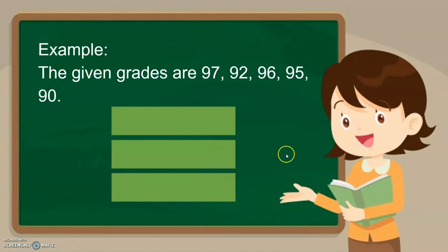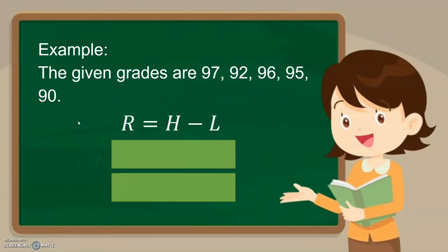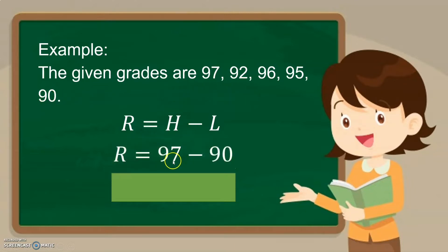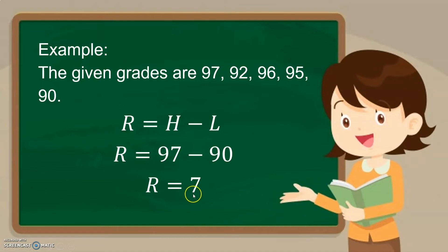For example, the given grades are 97, 92, 96, 95, and 90. Following the equation for range — highest minus lowest — the highest score is 97 and the lowest is 90. So we have range equals 97 minus 90, and the answer is 7. So the range is 7.